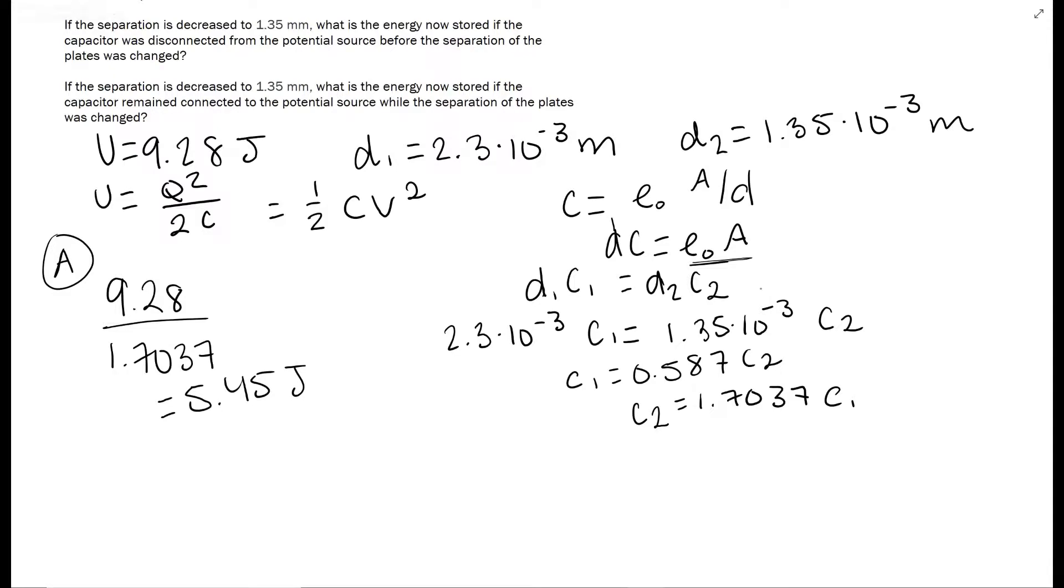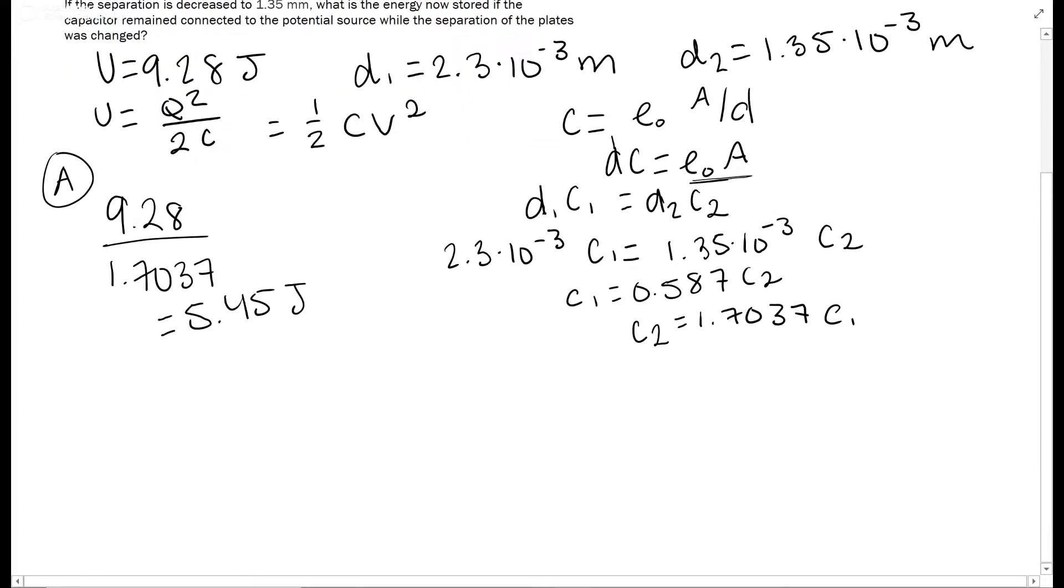Okay, for part B, we still have the same separation. So these ratios that we made over here are still going to be the same. However, now it is still connected to the potential source of energy. So there is some sort of voltage running through this. We're going to use the second equation, 1/2 CV squared, because there is voltage. In the first one, there was no voltage. It was disconnected. So we could use just a charge.